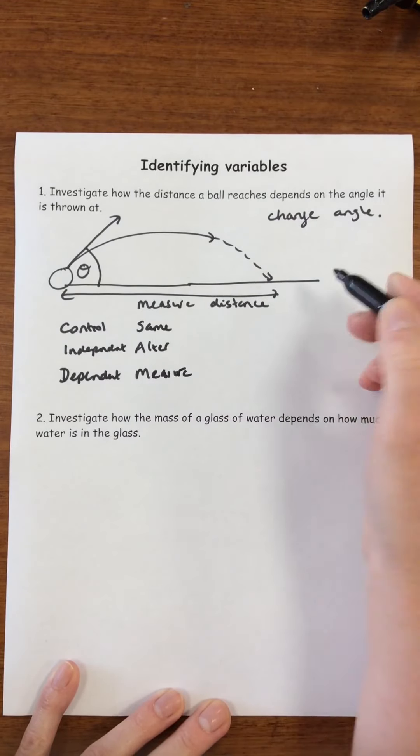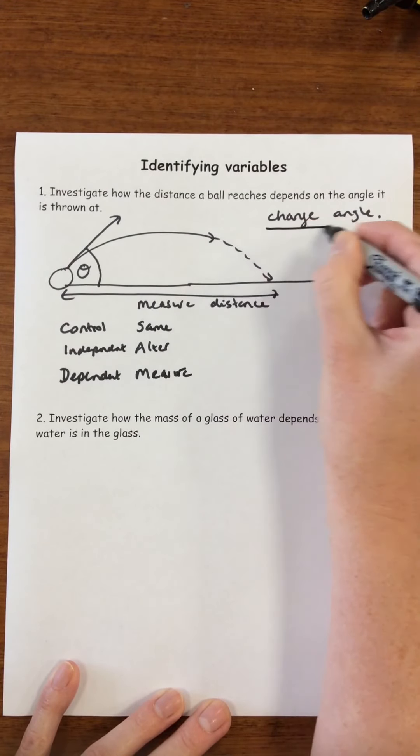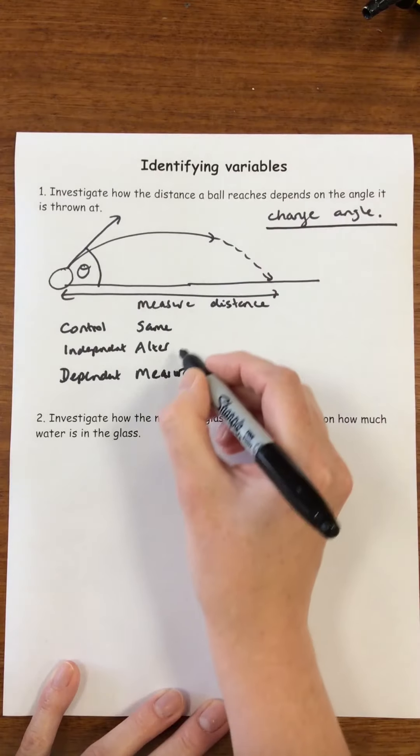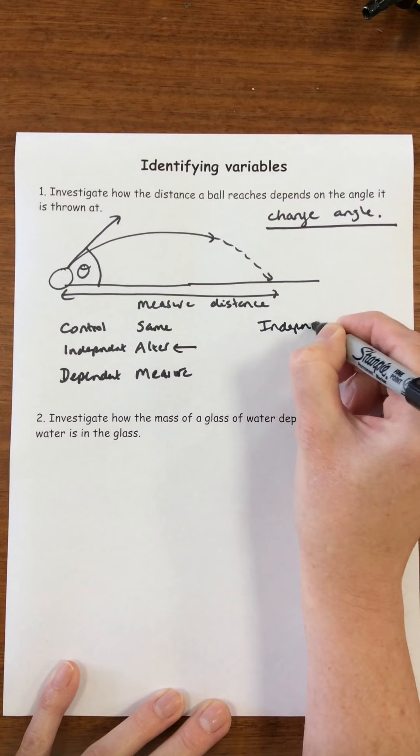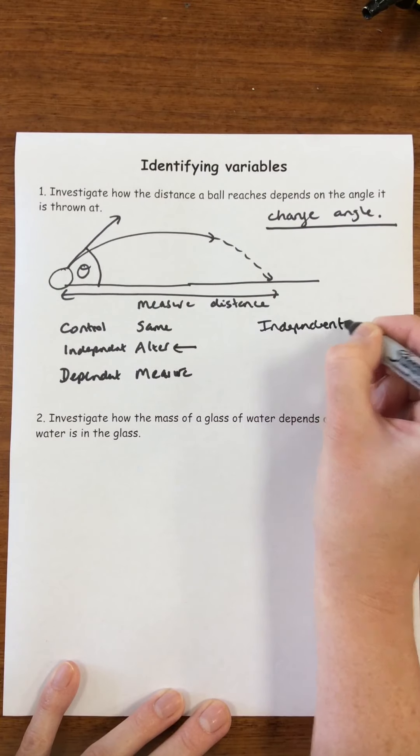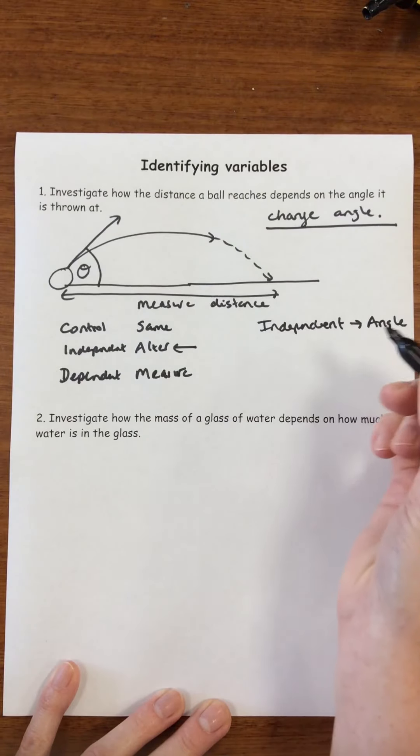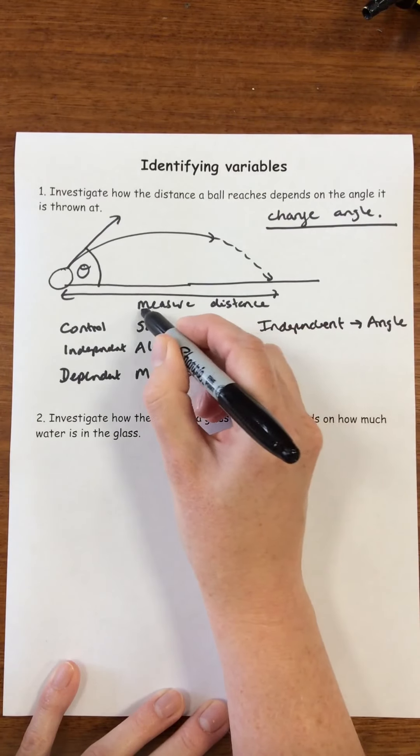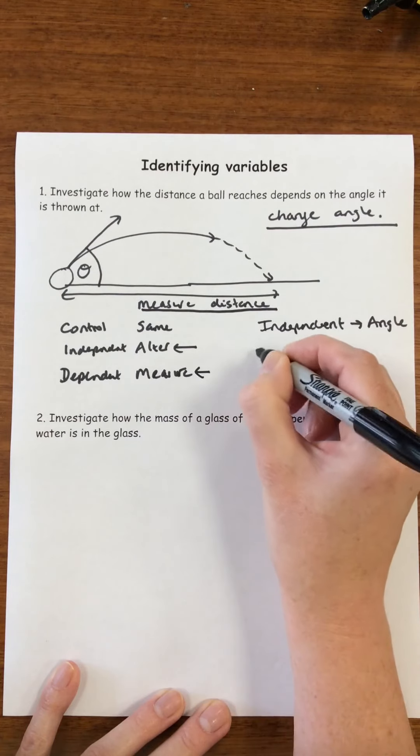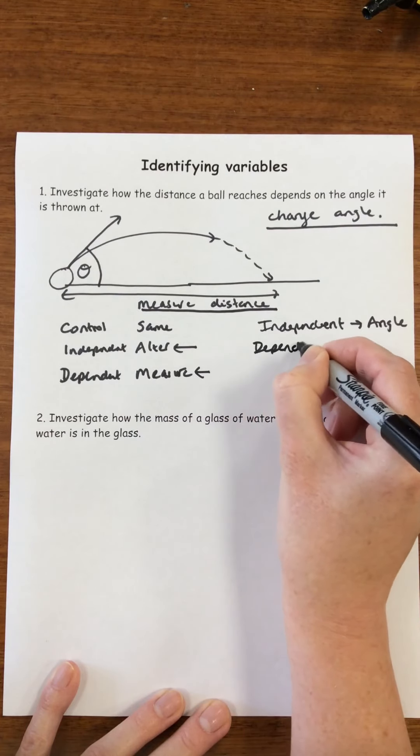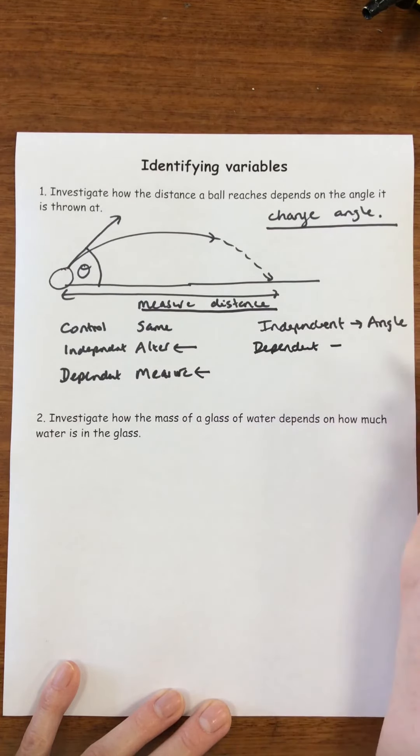While we were thinking about the investigation we decided we were going to change the angle, and that is the same as altering. So that means our independent variable will be the angle. Then we decided we were going to measure our distance and the one we measure is the dependent variable. So our dependent variable will be our distance.